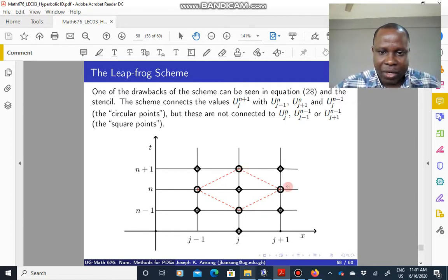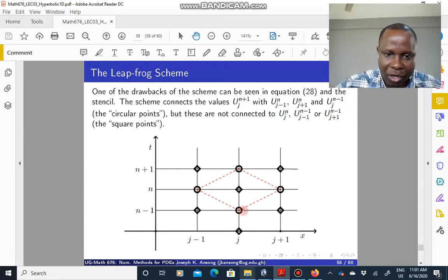But these circular points are not connected to the rectangular ones or the square points. So that is the problem. It looks as though the scheme is solving the circular ones and there is another system that is solving the square points.